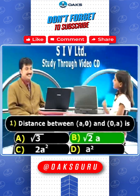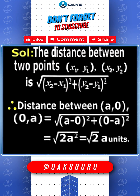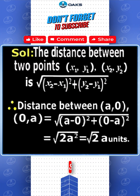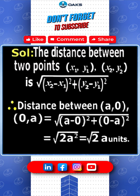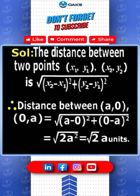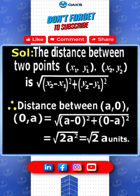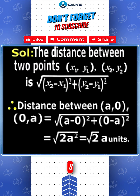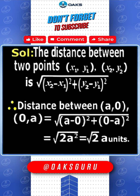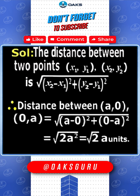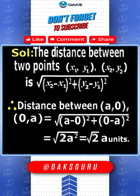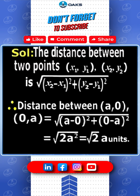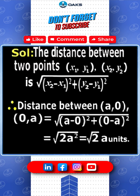The right answer. The distance between two points (x1, y1) and (x2, y2) is the square root of (x2 minus x1) whole square plus (y2 minus y1) whole square.